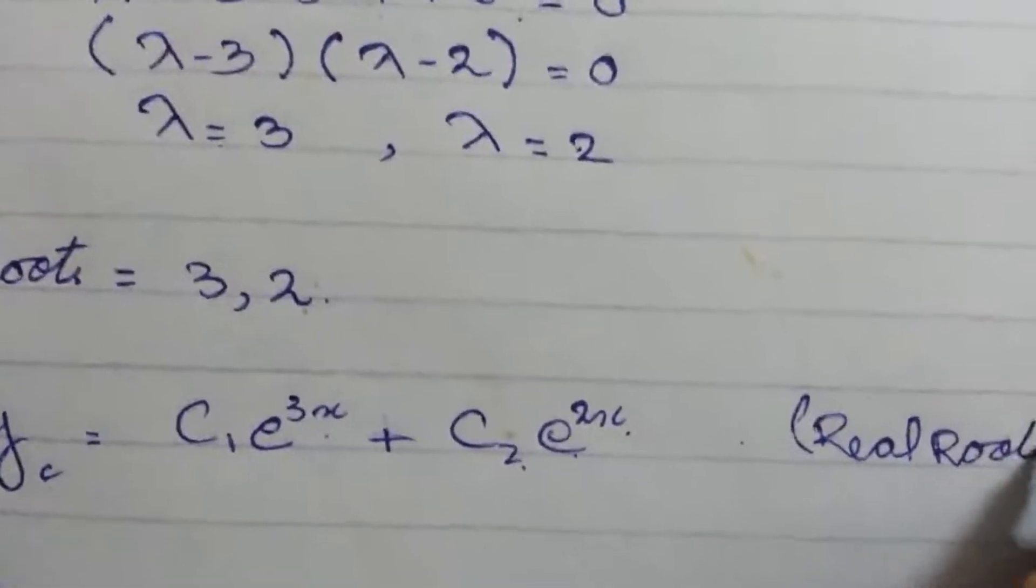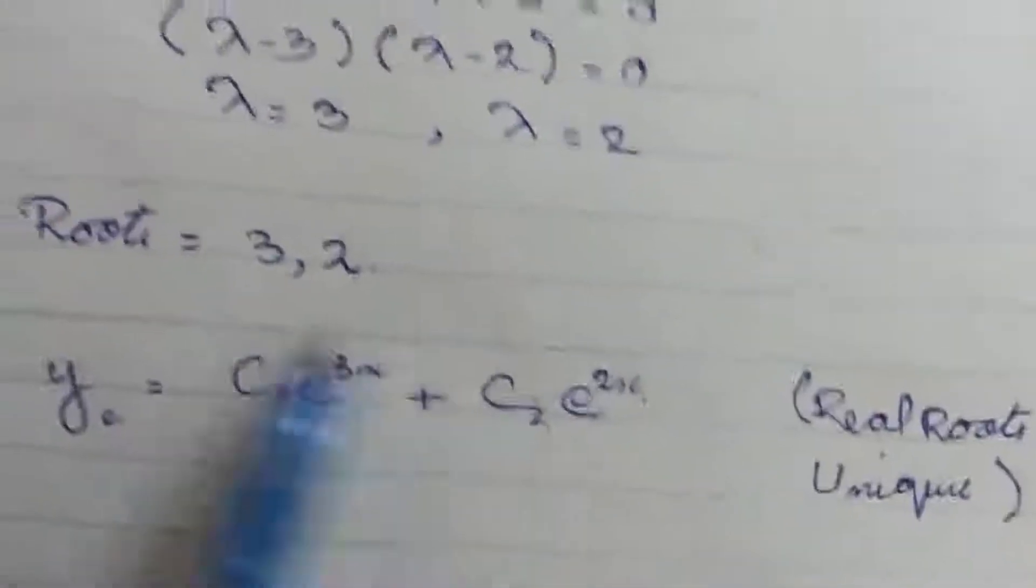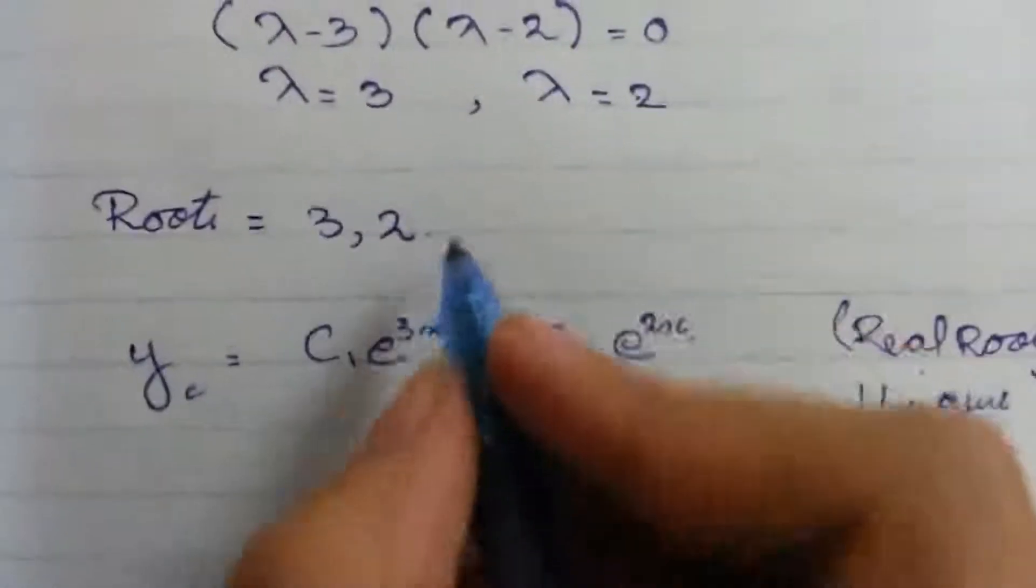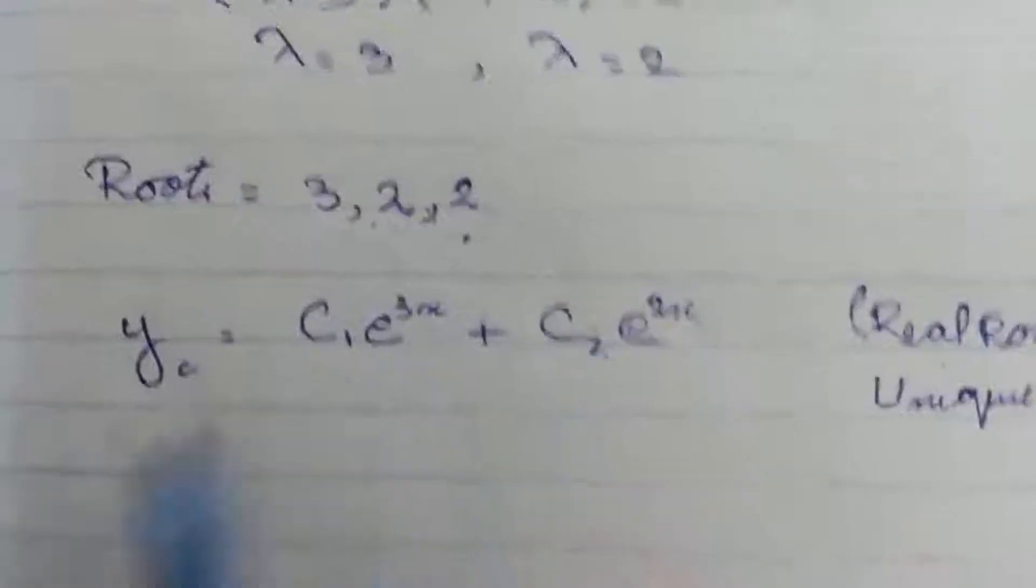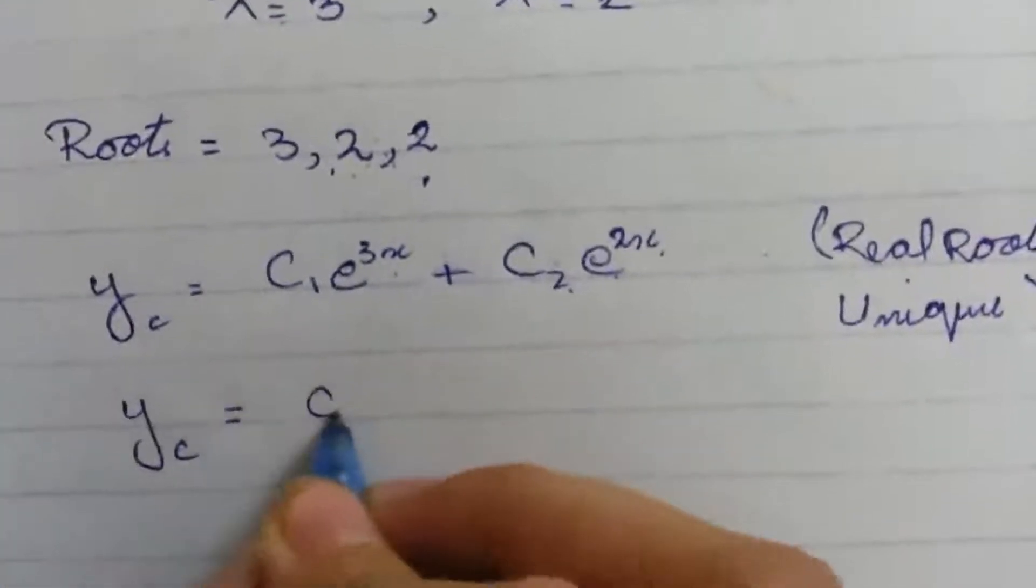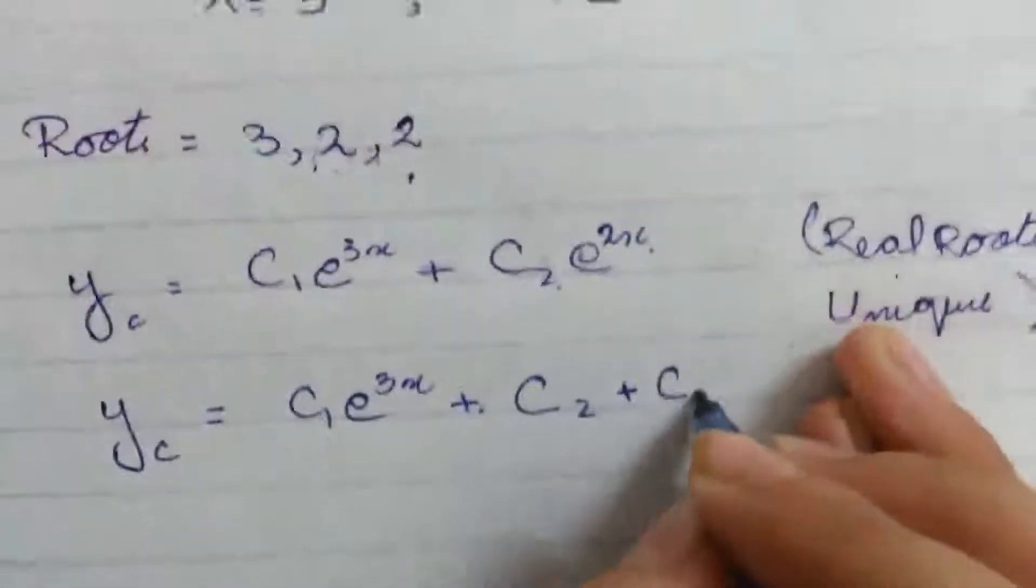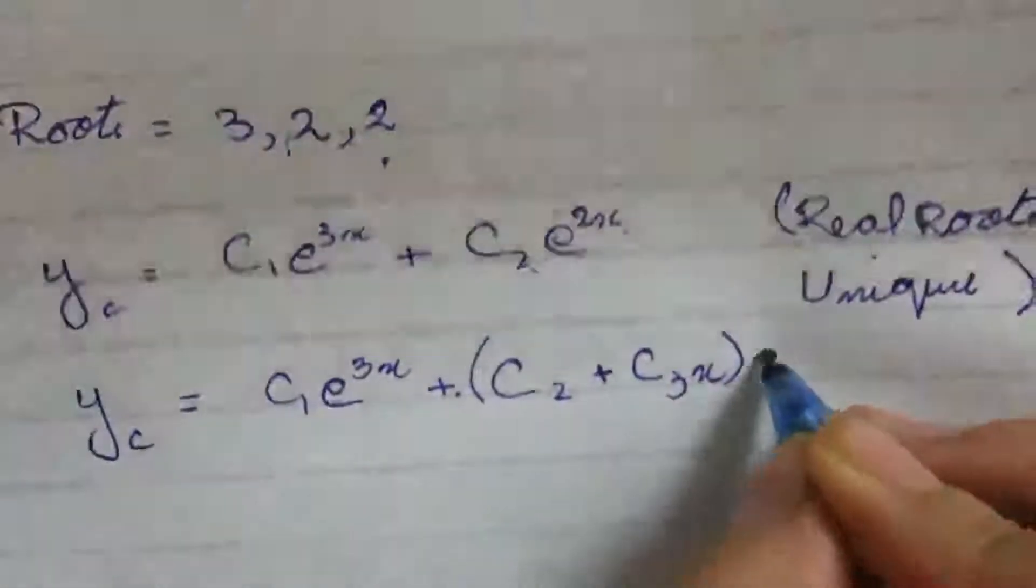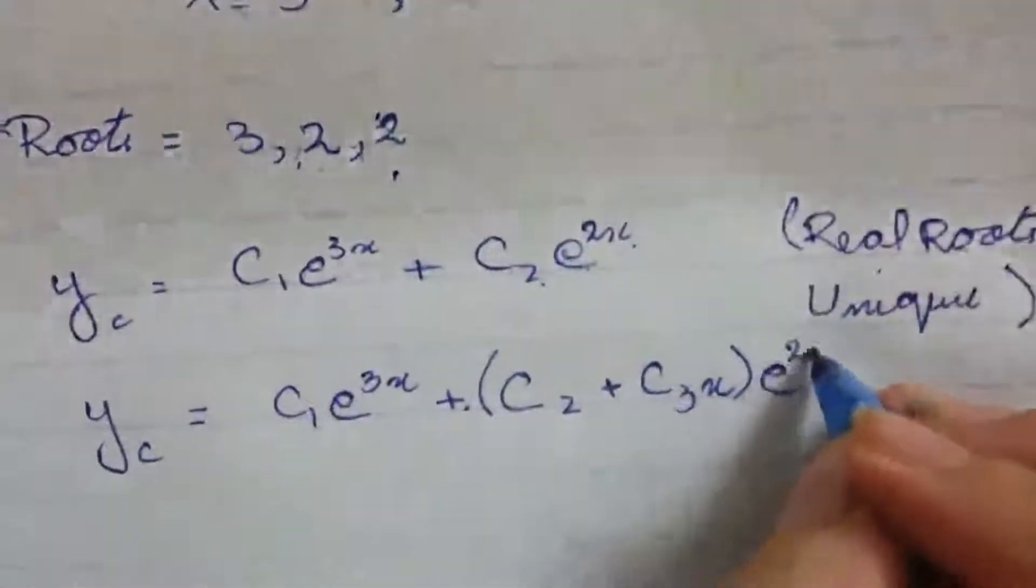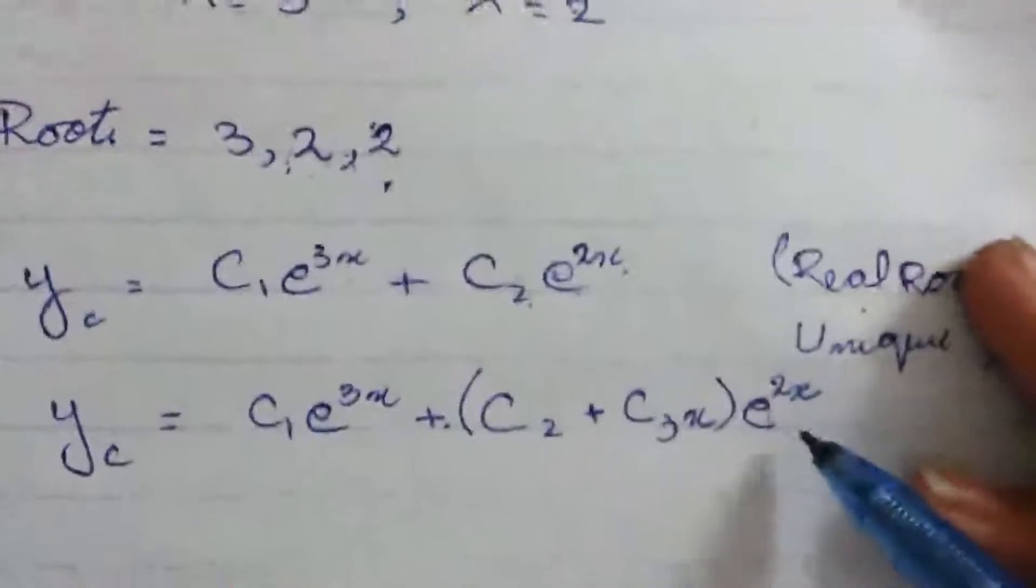But if there is, for example, 2 means repeated root, how we will write that? yc equals c₁e^(3x) plus c₂ for this plus c₃x for this 2, and the whole multiplied by e^(2x). This is the case for real and repeated roots.